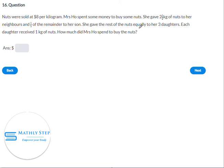She gave the rest of the nuts equally to her three daughters. We know the rest of the nuts is 1 minus 1/5, which is 4/5 of the remainder. Each daughter received 1 kg, so total, the daughters received 3 kg of nuts altogether.